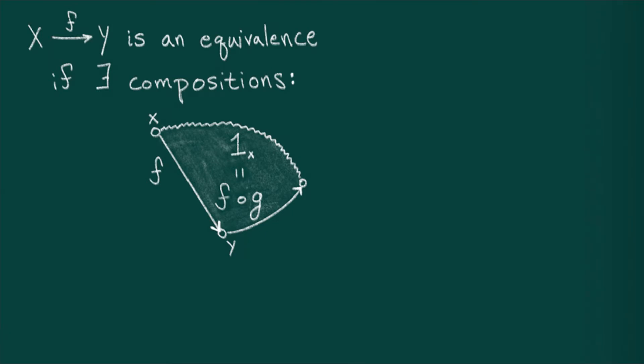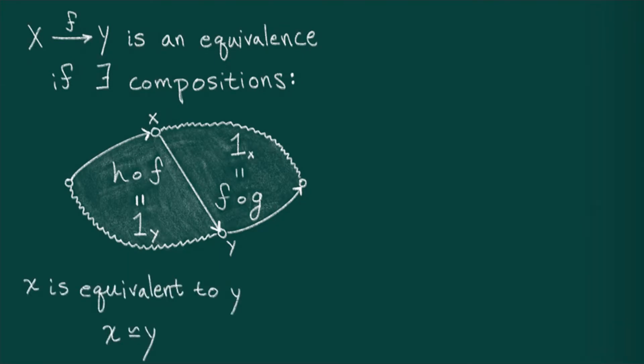Any notion of equivalence should be symmetric. There should be a map which is undone by f. More formally, I should have a map h from y to x so that h composed with f is the identity. Therefore, we see that we can factor the identity on y and the identity on x through f. When such a map exists, we say x is equivalent to y. There should at least be some implicit equivalence when we say this.